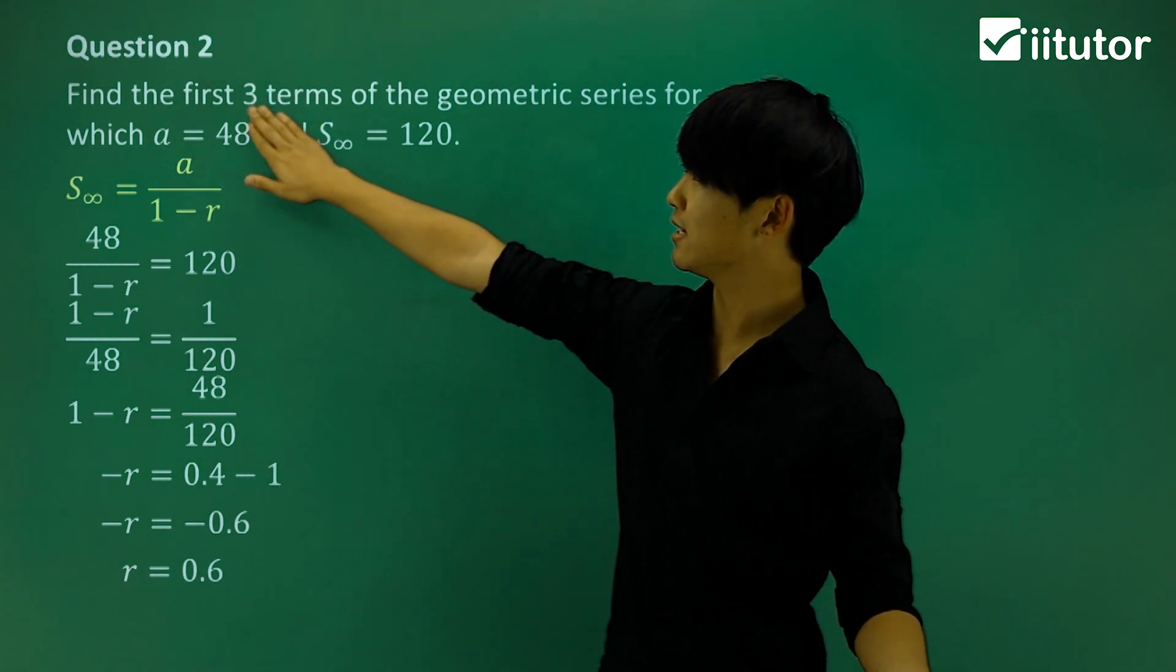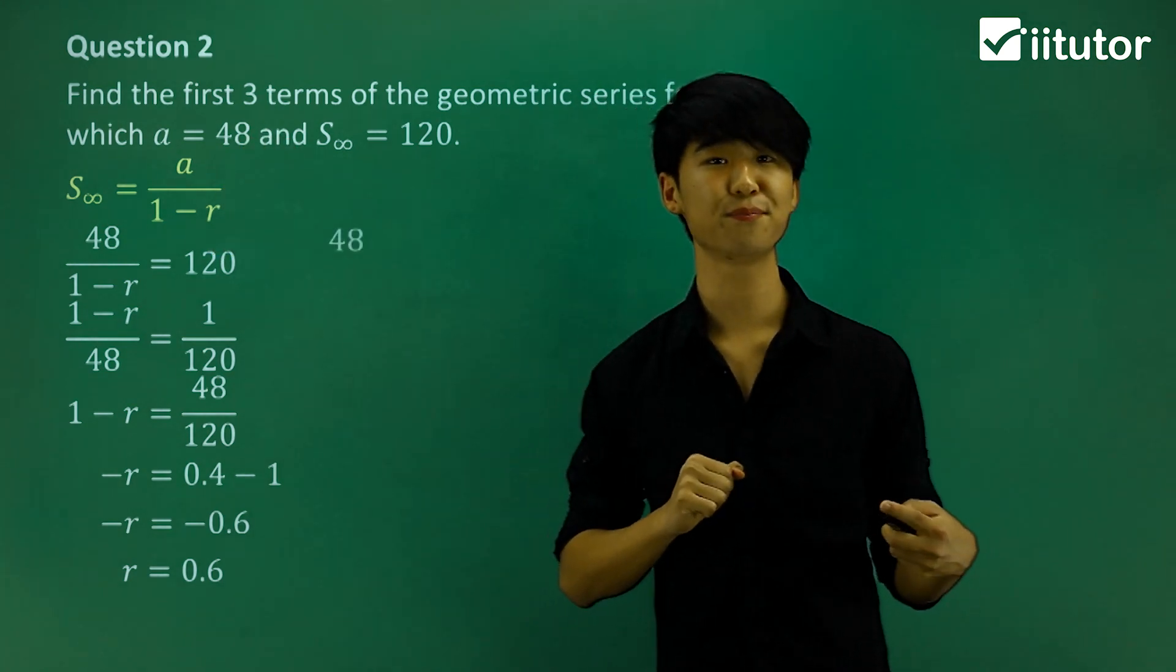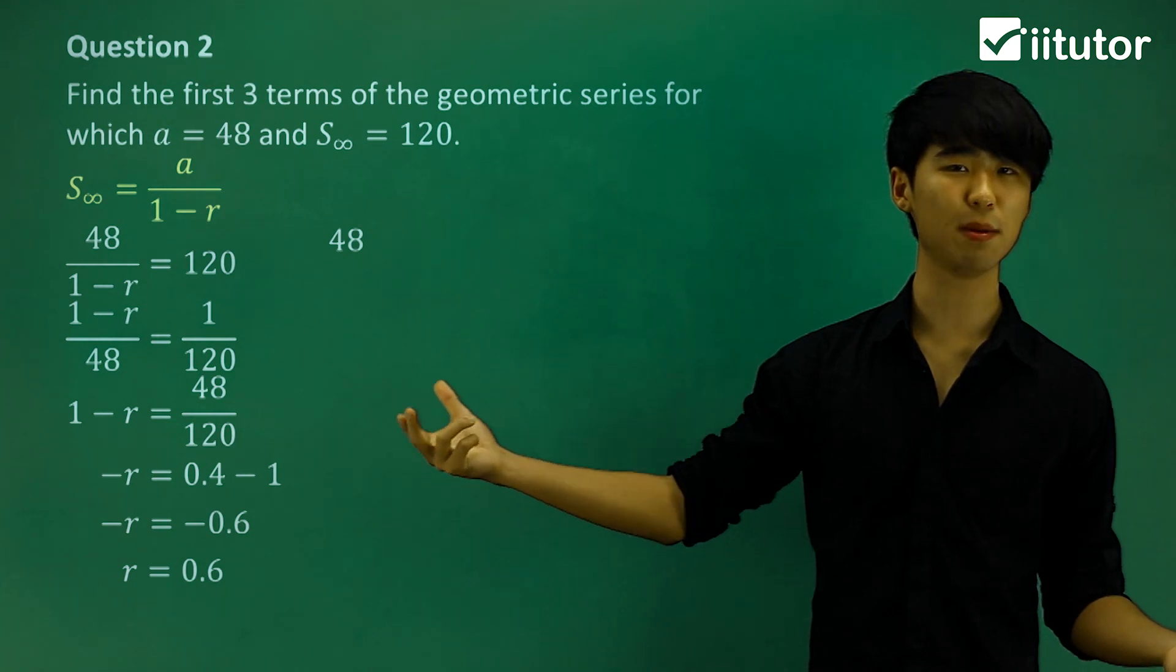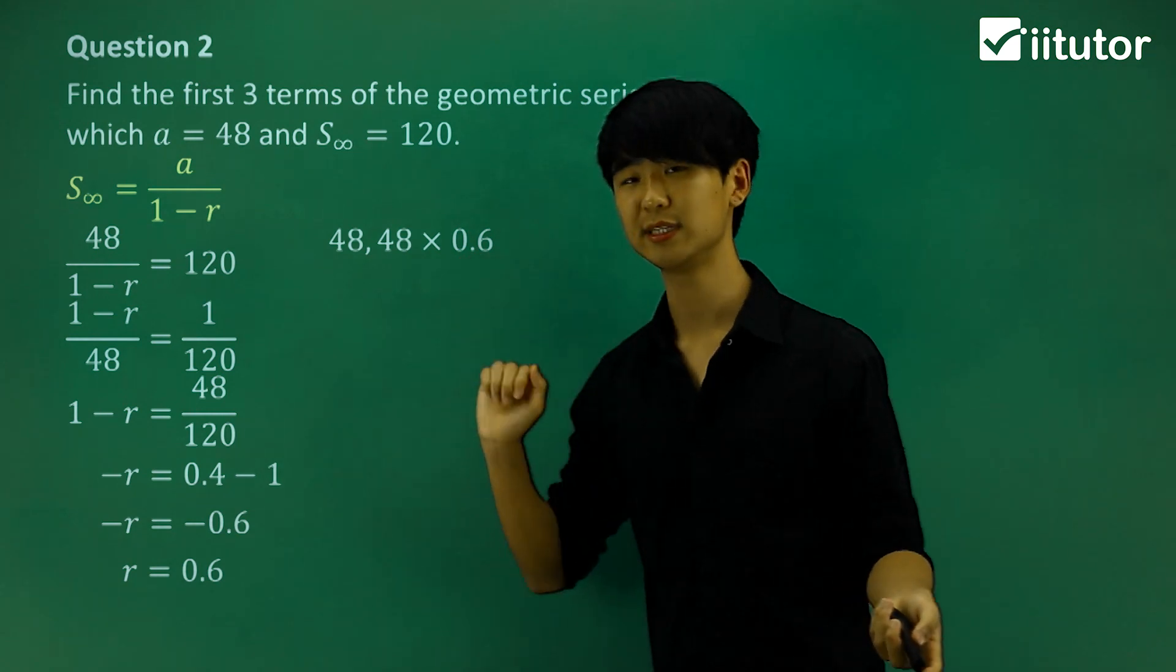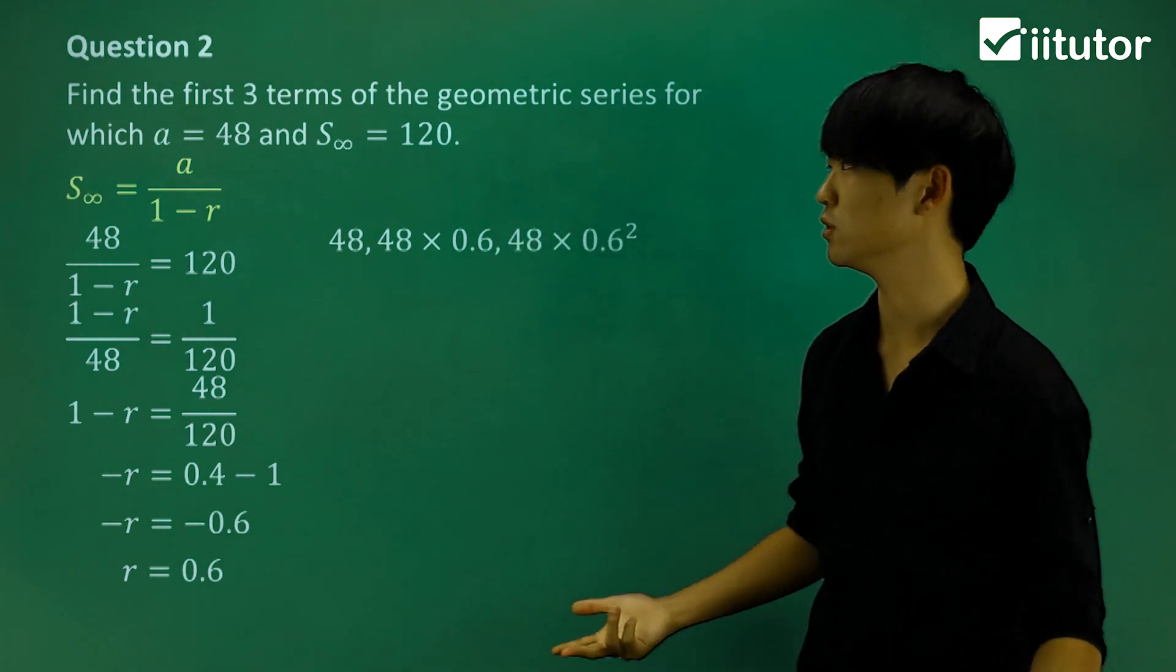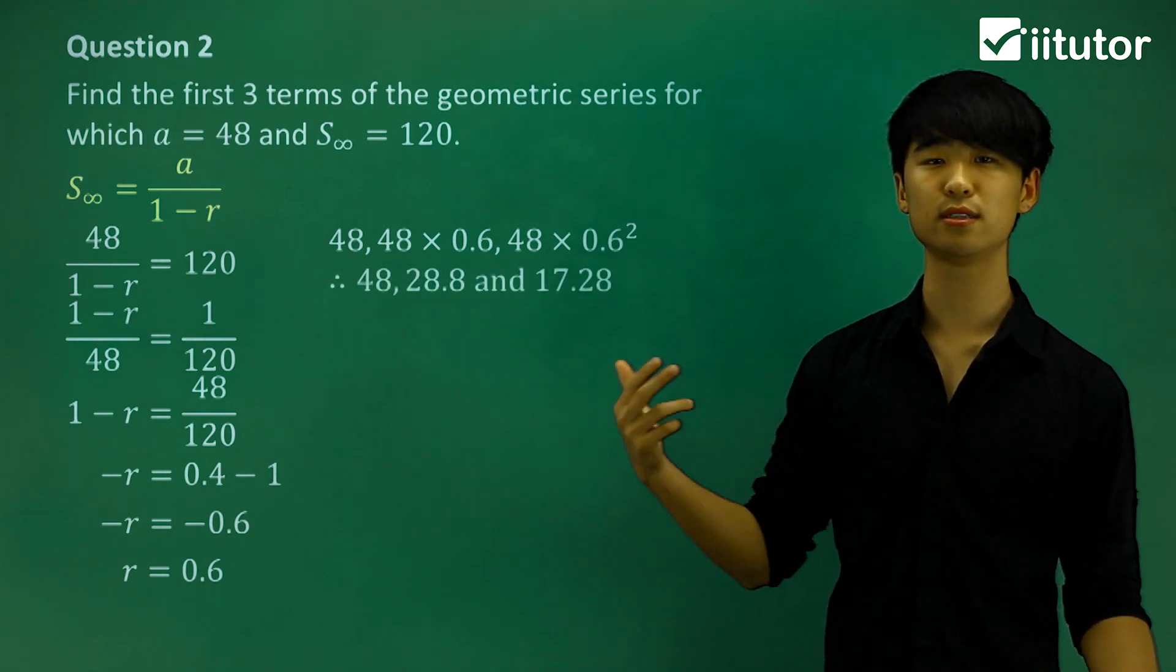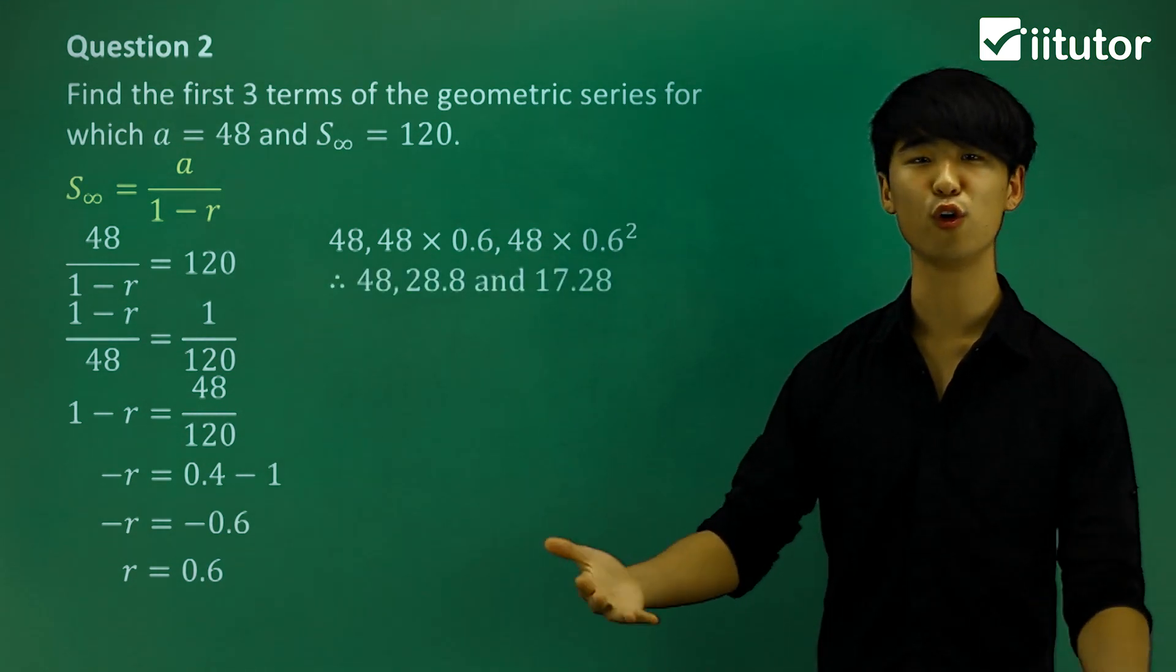Let's go back to the question. It says find the first three terms. I know the first term is 48. The next term is 48 multiplied by the common ratio. The term after that will be the second term multiplied by 0.6 again. If we calculate this, these will be the answers. Those are the first three terms for the limiting sum.